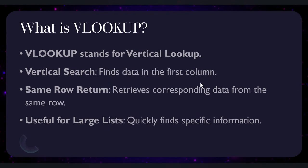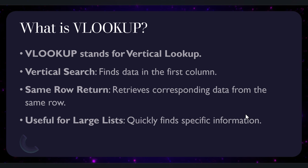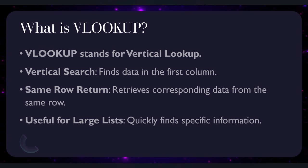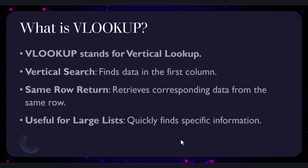Let's begin with VLOOKUP. VLOOKUP stands for Vertical Lookup — it allows you to search for a value in the first column of a table and return a value in the same row from a specified column. This function is particularly useful when you have a large list and need to find specific information quickly.